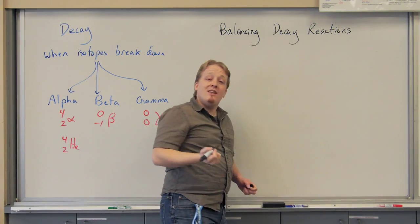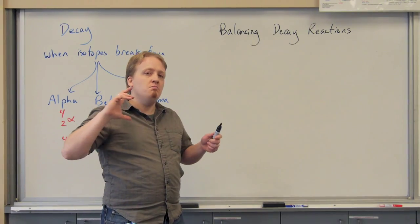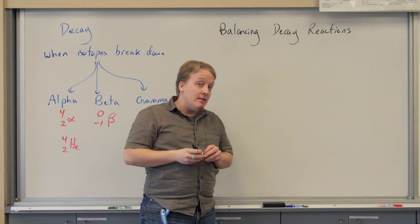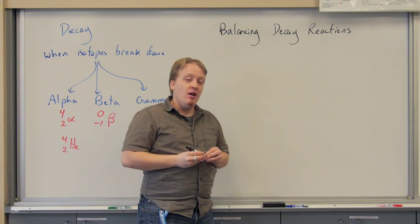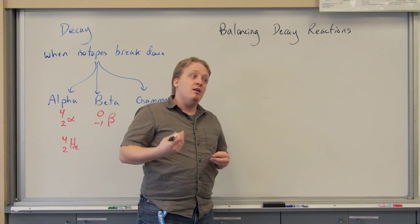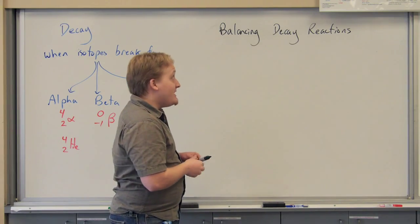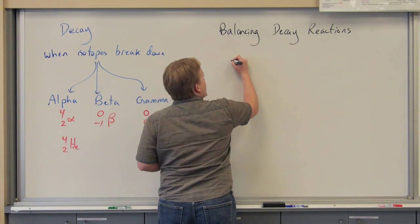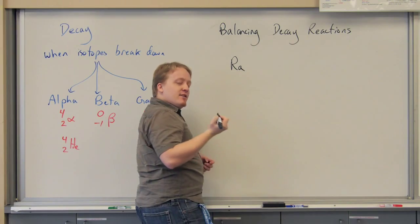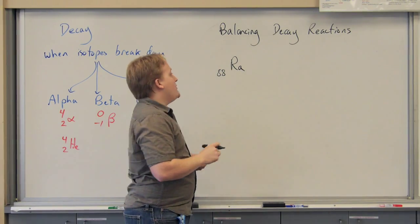We start with an unstable isotope. Now we're going to start with radium. Radium, you should probably know the name of. Marie Curie, if you're thinking about your chemistry history, was a discoverer of radium. Also notable, she won a Nobel Prize for it. She also died of radiation poisoning. This stuff is very unstable. Now, radium, symbol Ra, has an atomic mass of 88, and an atomic number of 226.